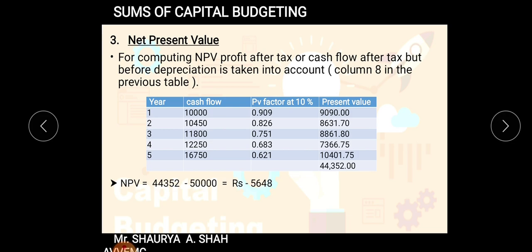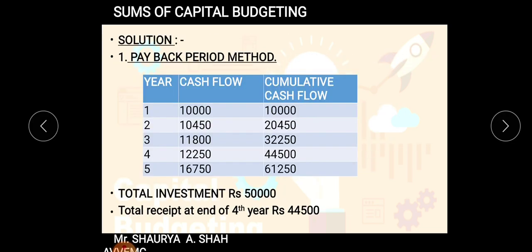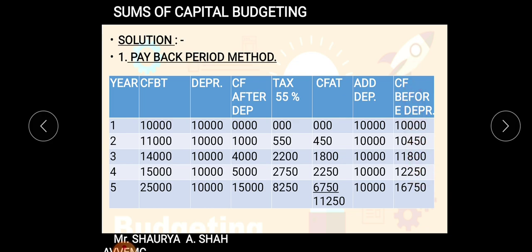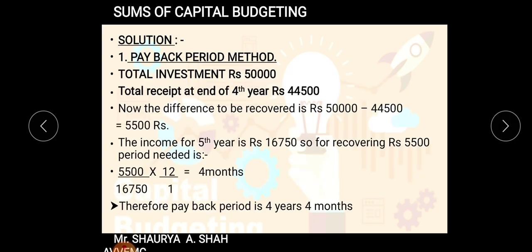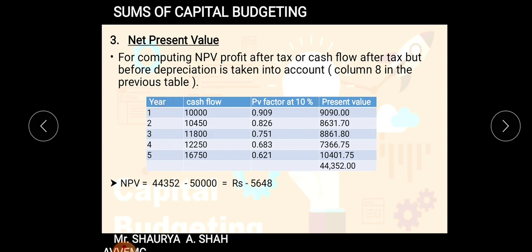For computing NPV, cash flow after tax but before depreciation is taken into account — column number eight in the previous table. You write down the years, write down the cash flow, and then discount it using the given factors. For example: 10,000 × 0.909 = 9,090; 10,450 × 0.826 = 8,631.70; 11,800 × 0.751 = 8,861.80; 12,250 × 0.683 = 7,326.75; 16,750 × 0.621 = 10,401.75.